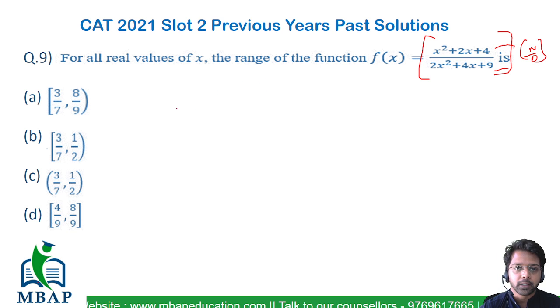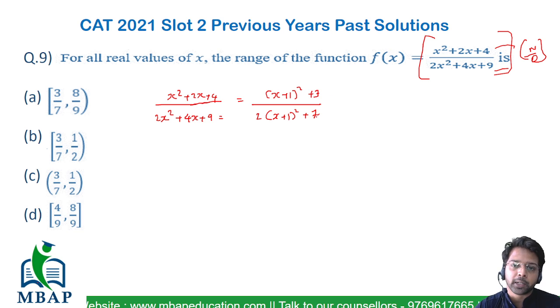The numerator is x² + 2x + 4, which we can rewrite as (x+1)² + 3. On the other hand, the denominator is 2x² + 4x + 9. Let's redraft this to be 2(x+1)² + 7. Now the numerator and denominator still don't have anything common apart from (x+1)².